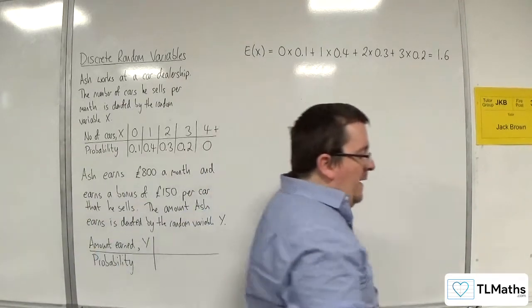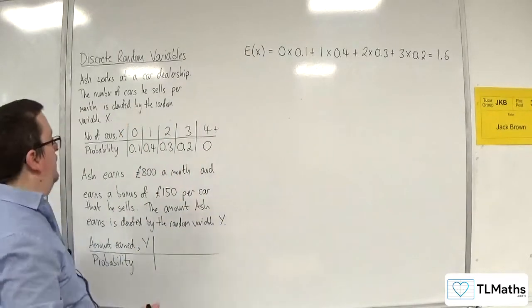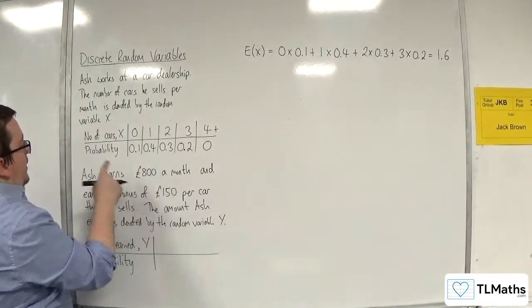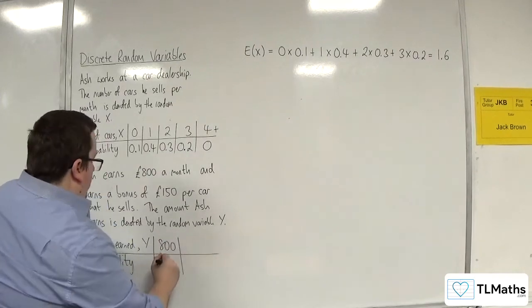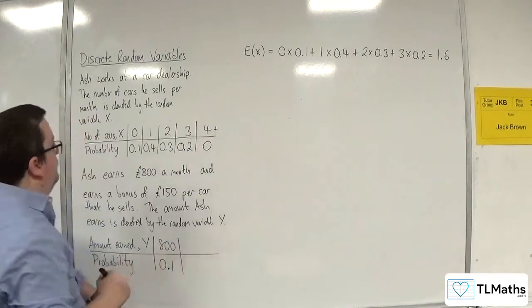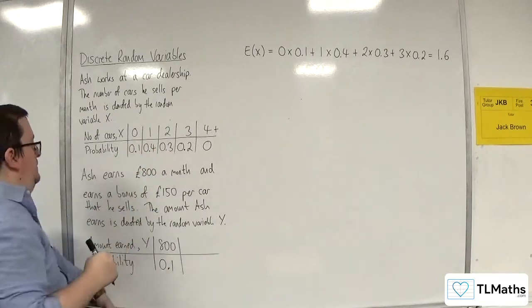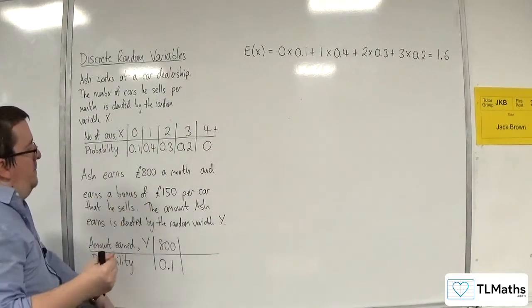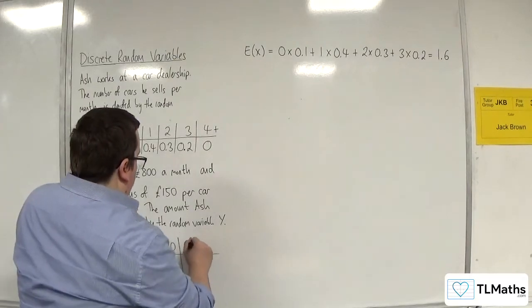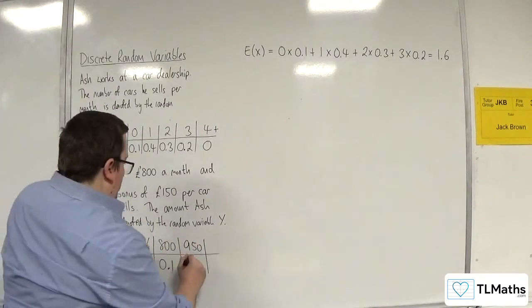OK. So, if Ash sells 0 cars, then he'll take home just £800. So, that's for the probability of 0.1. If he sells 1 car, then he gets the £800 plus the bonus of £150. So, that's £950. So, that would be 0.4.